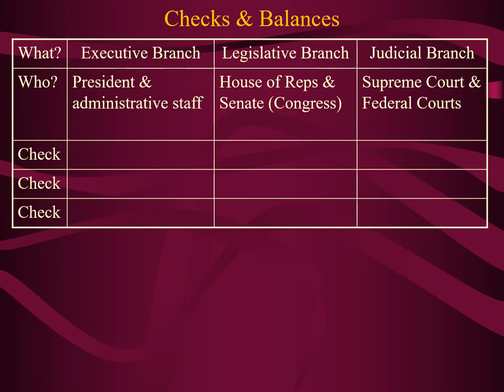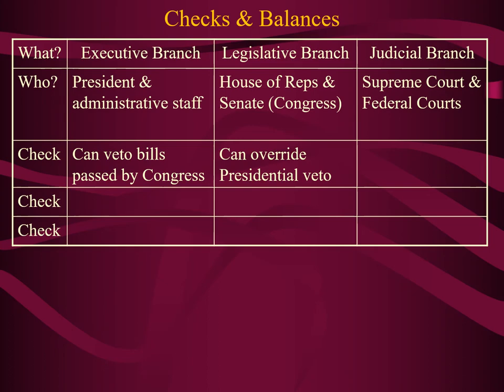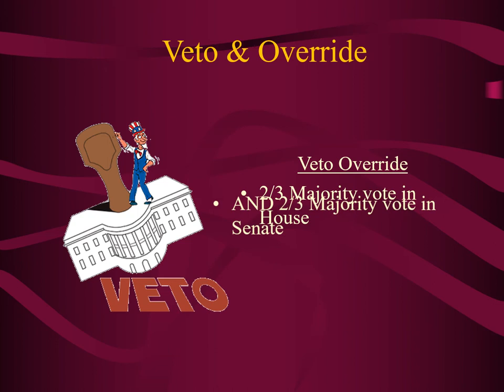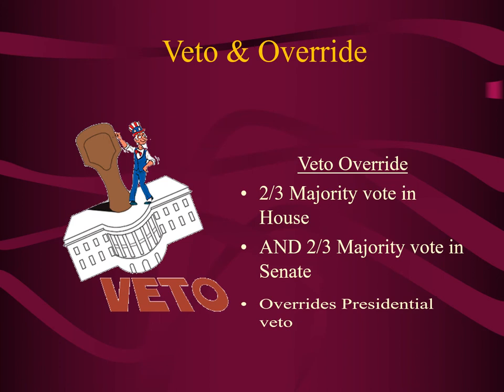If Congress passes legislation that the president doesn't support, the president has the authority to veto those bills. However, the legislative branch has the final say — the House and Senate have the ability to override a presidential veto. In order for a bill to become a law it must pass by a simple majority, but if the president vetoes a bill, a two-thirds majority vote in both the House and the Senate would override that veto, and the bill can become a law even without the president's approval.